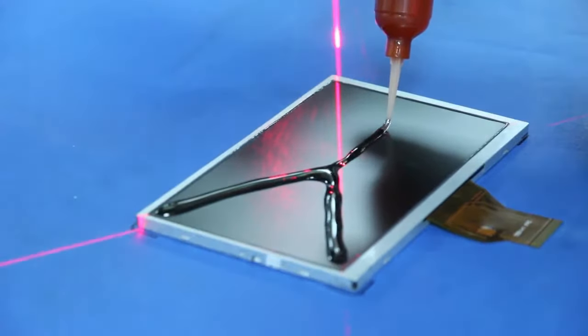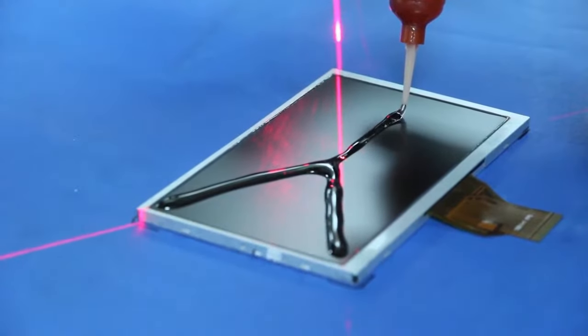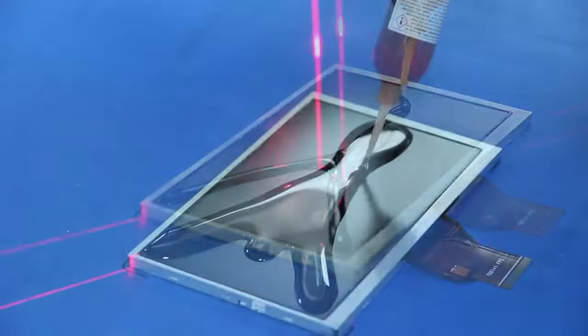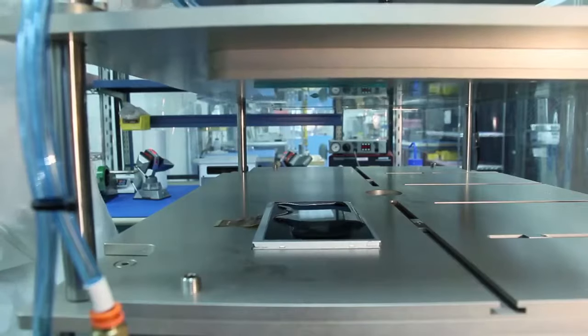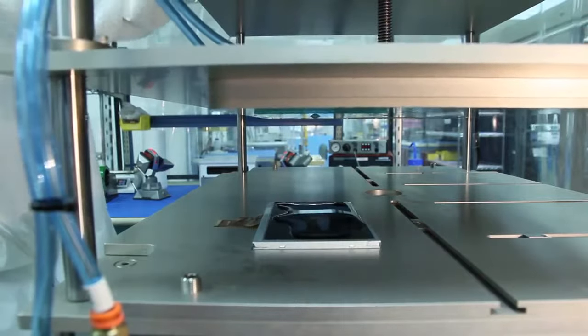Wet bonding allows for reworkability, non-yellowing of the bond over time, and enables displays to undergo rigorous testing for shock, vibration, and high altitude requirements. This provides the ruggedization our customers need as well as high quality optical performance.